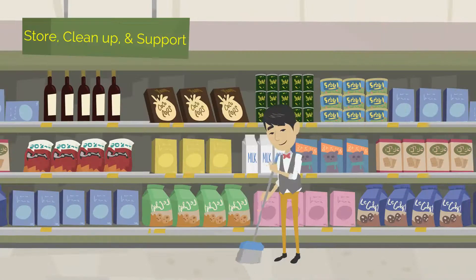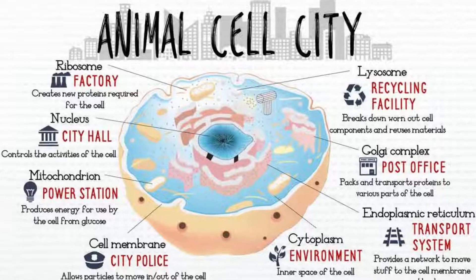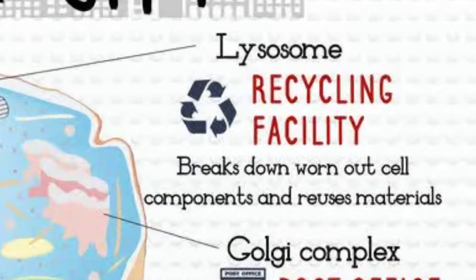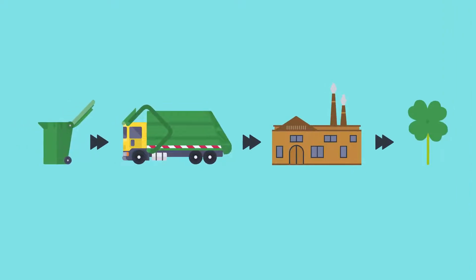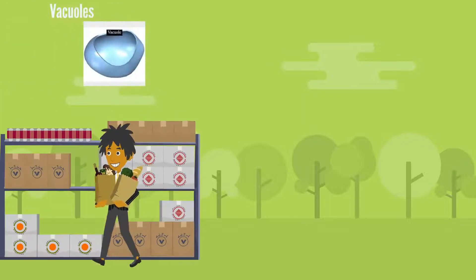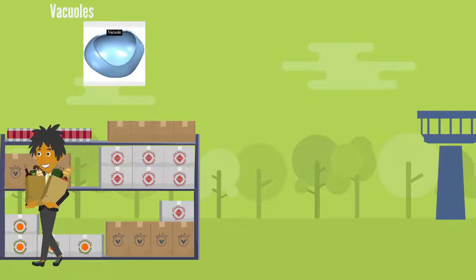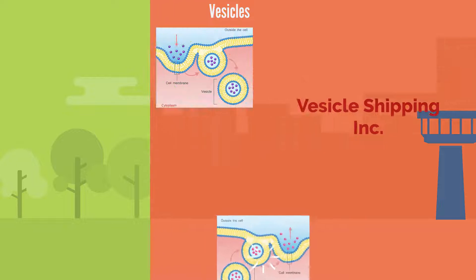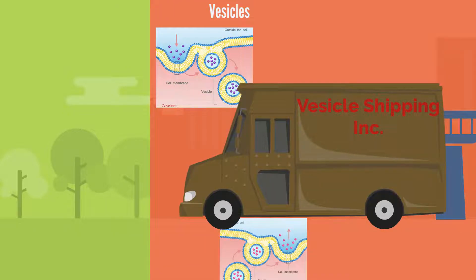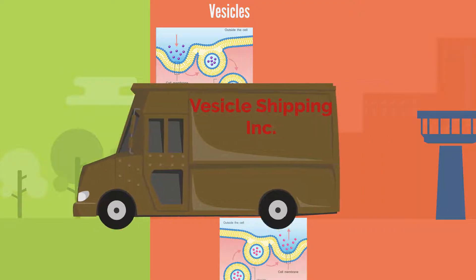Now let's move on to organelles that store, clean up, and support. First up, we have the lysosome, which is the recycling factory for Cell City — it breaks down old and worn out cell components and reuses its materials. Next up, we have the vacuole, which is the warehouse for the city; it stores food, water, waste, or other materials needed by the cell. Next, we have vesicles, which are the transport vans for Cell City, transporting substances from one cell to another and from one part of the cell to another.